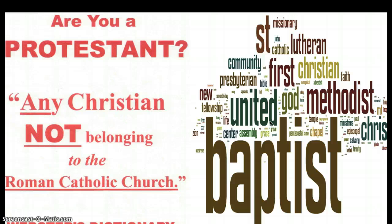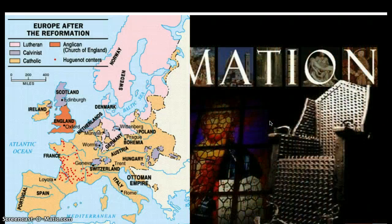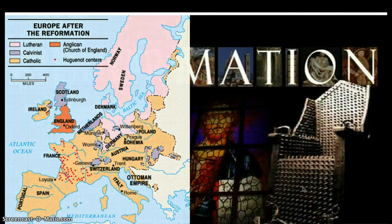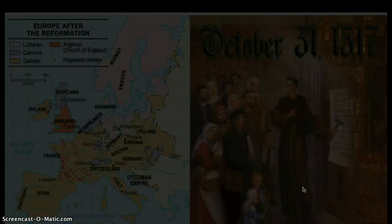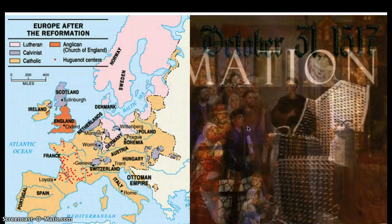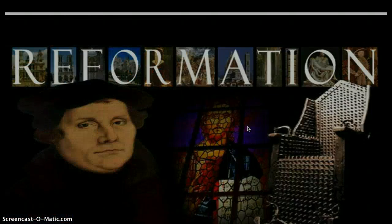The Reformation is the unit we are studying. It begins with Martin Luther nailing the 95 Theses to the church door in Wittenberg. The Protestant Reformation was a period when the Catholic Church split apart and you get the formation of Protestant churches — any church that is not Catholic. It was the period when Christianity split into many different forms.